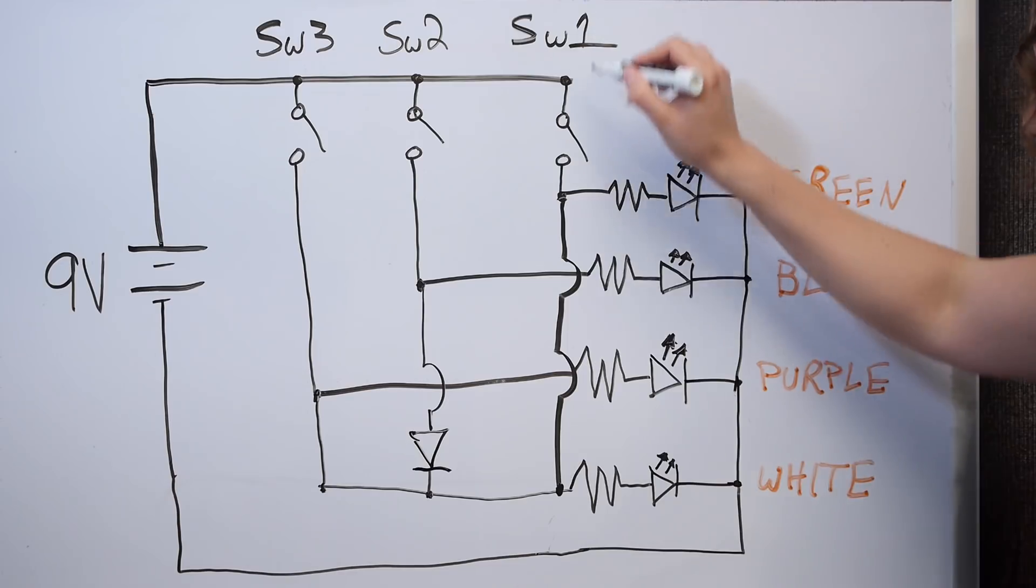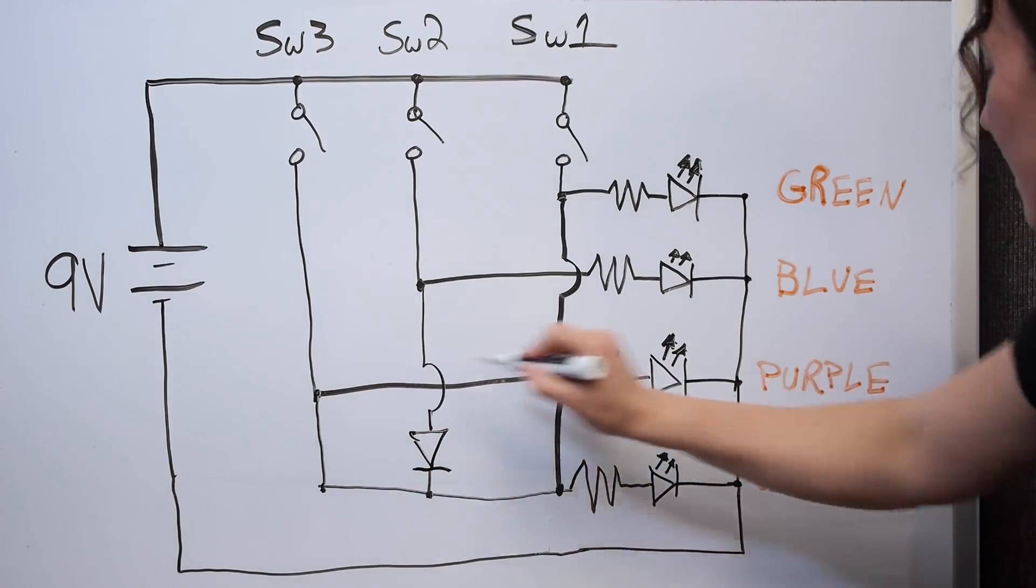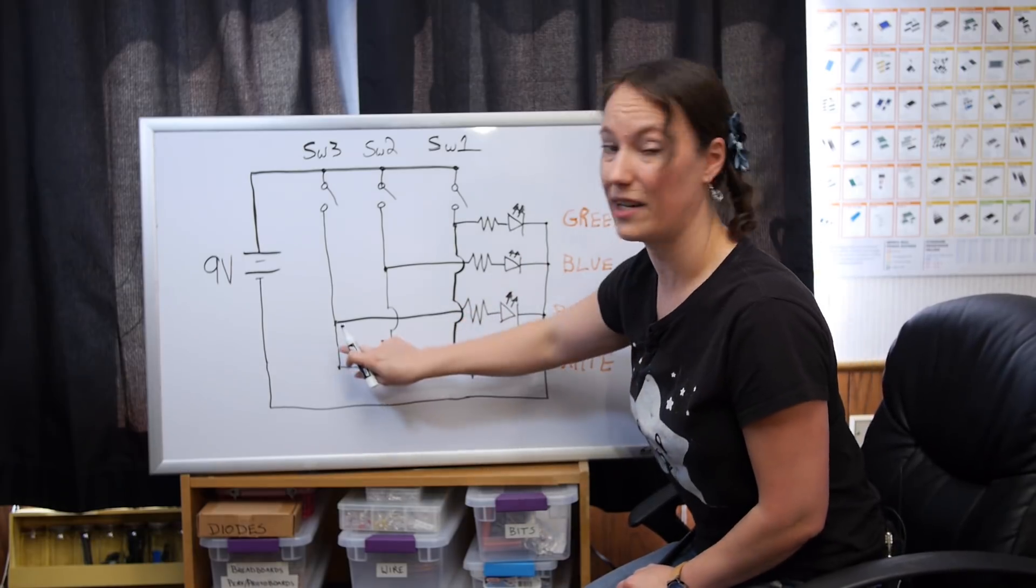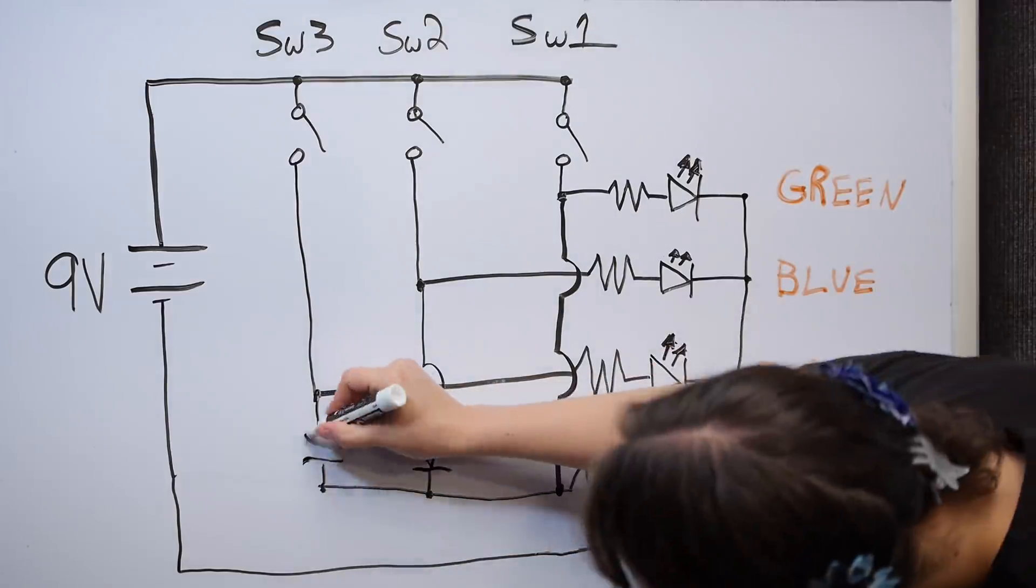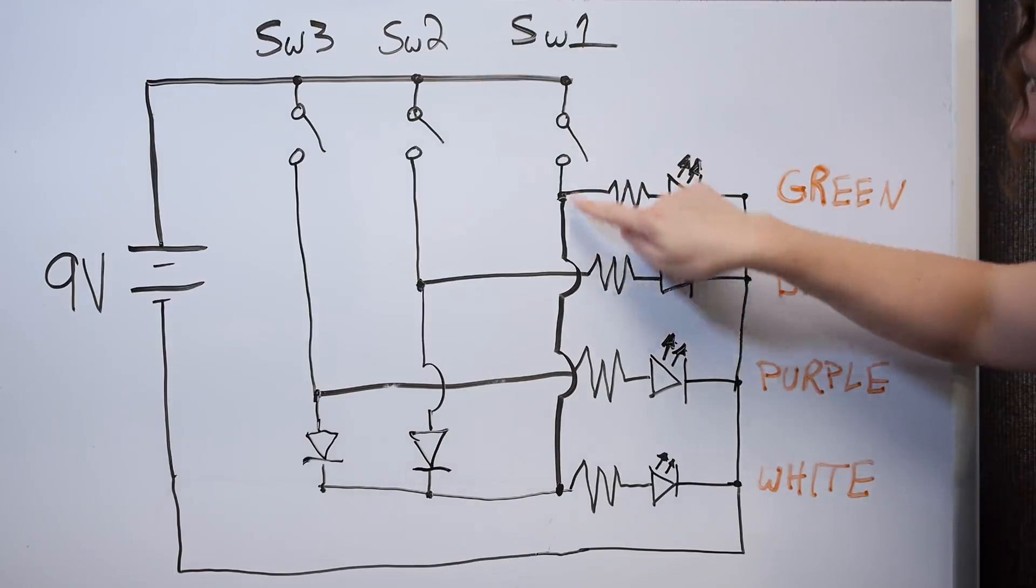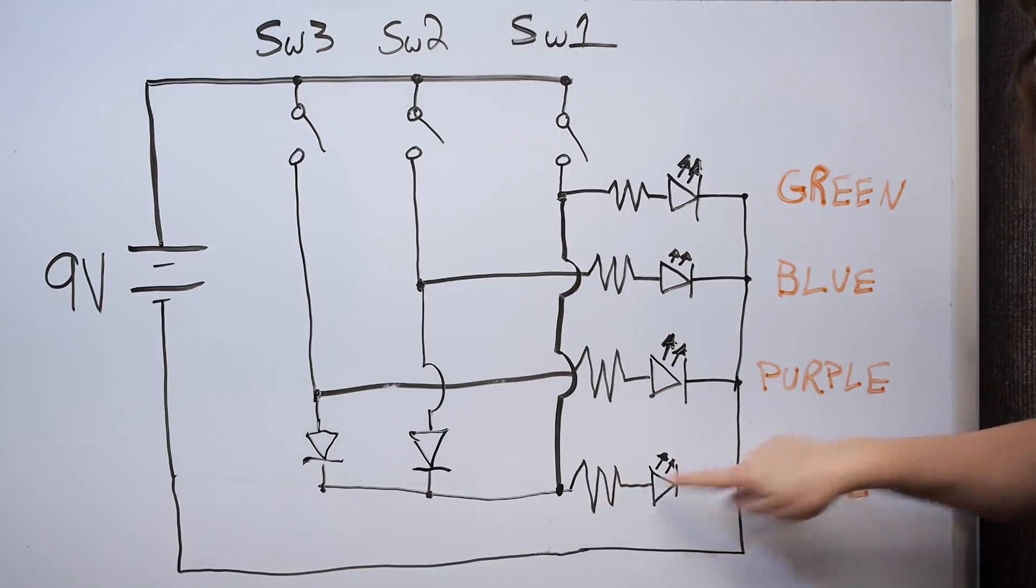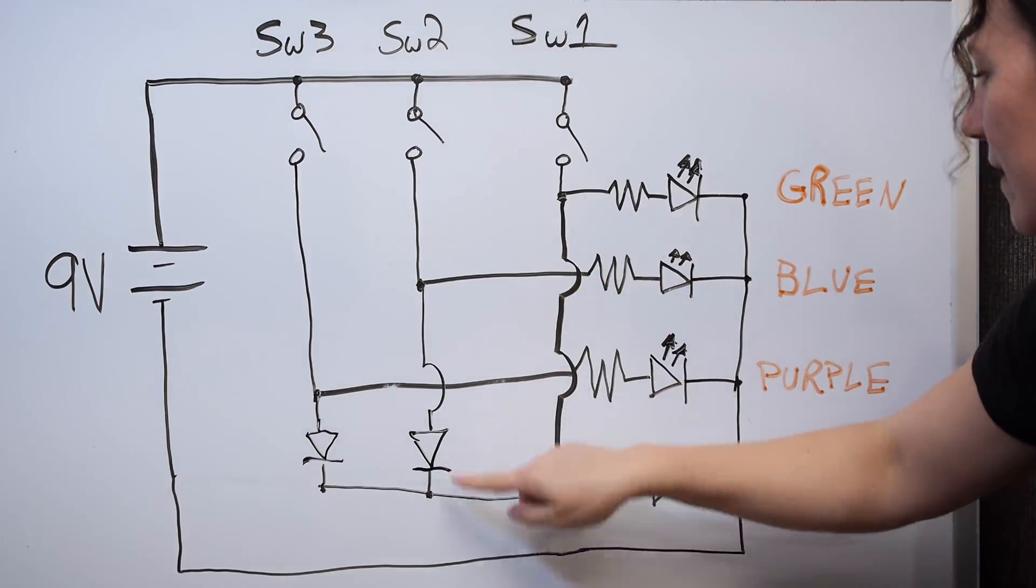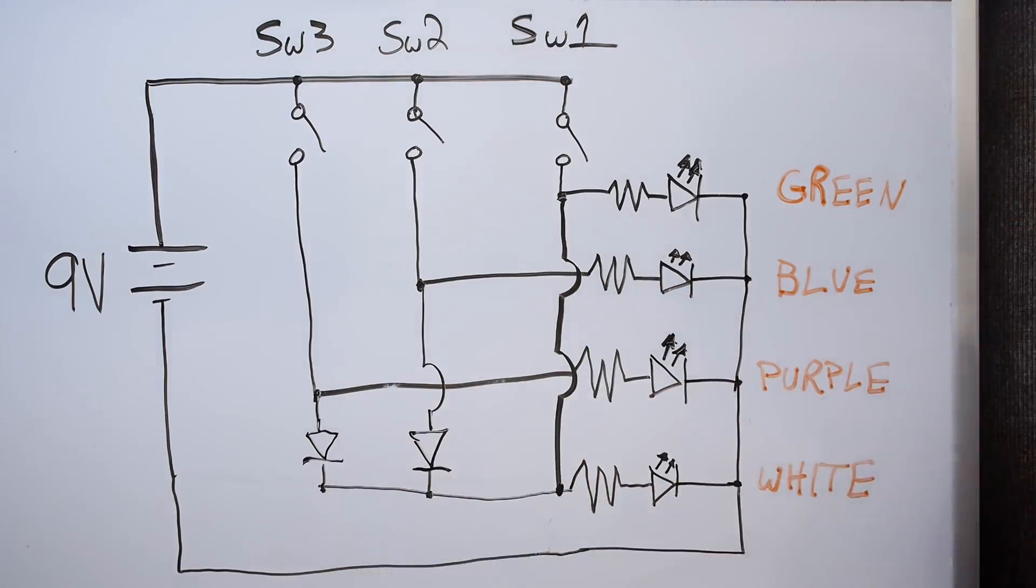So this will stop the electricity from flowing back up this way to the blue. All right, let's keep going. So this comes on, but now we can still go back up here to the purple. So we'll add another diode right here. Let's double check switch one. Goes there, turns on, goes all the way down here. Turns on. Can't feed back that way. And can't feed back that way. Awesome.